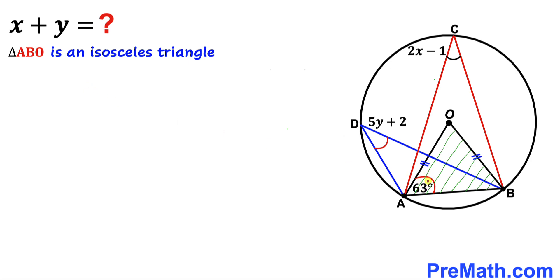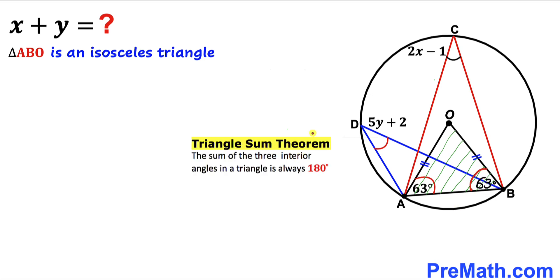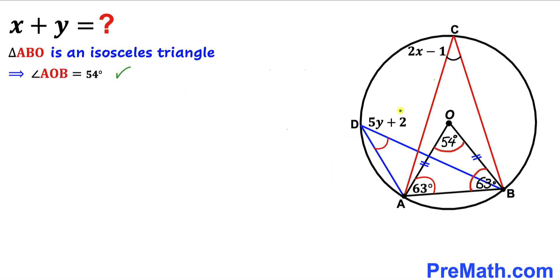Let's focus on triangle ABO. We can see that this is an isosceles triangle since this side is equal to this side. So if this angle is 63 degrees, this angle has got to be 63 degrees as well. According to the triangle sum theorem, the sum of the three interior angles is always 180 degrees. So this angle AOB turns out to be 54 degrees.